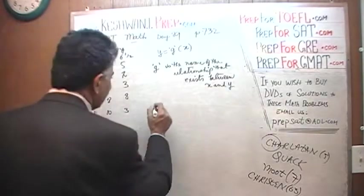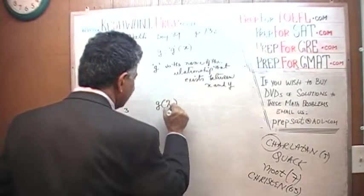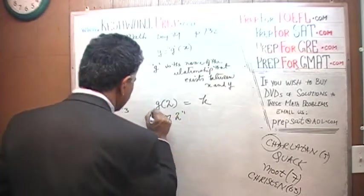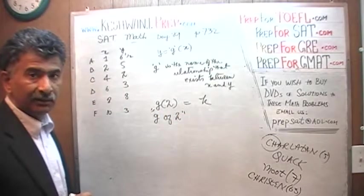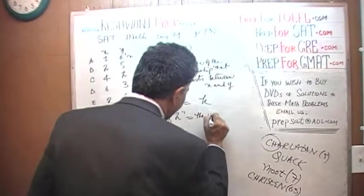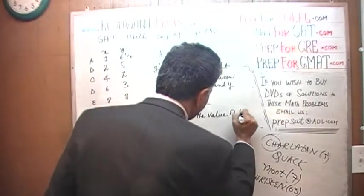Now we are told that G of 2 equals K. This is how it is read. G of 2. This is how we read it, but what does it mean? It means the value, this means the value of the function, which is same as saying the value of Y.